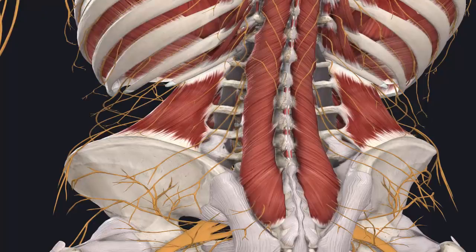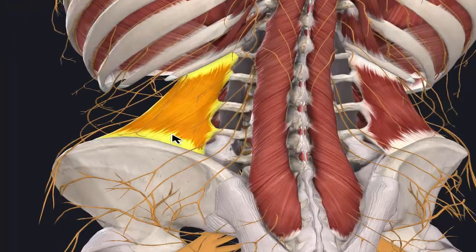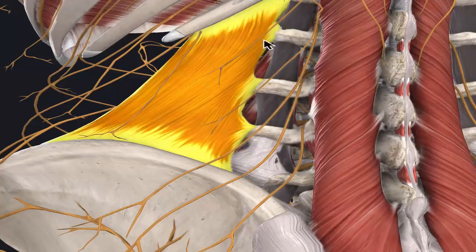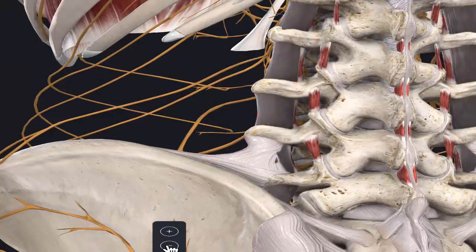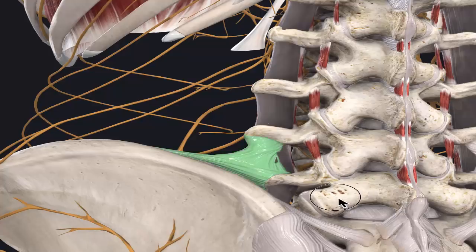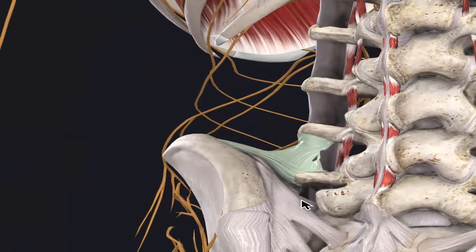We need to go down a little bit deeper. This is the QL, or quadratus lumborum — you can have muscle spasms in there as well. Moving all of these out of the way and peeling back some of these nerves, right where we have what we call that back dimple, we have a very important ligament.